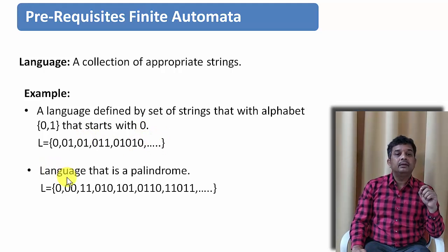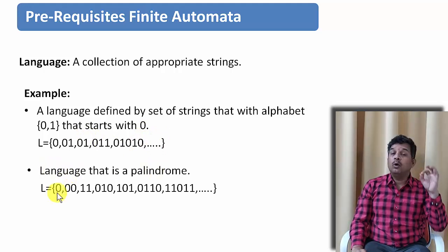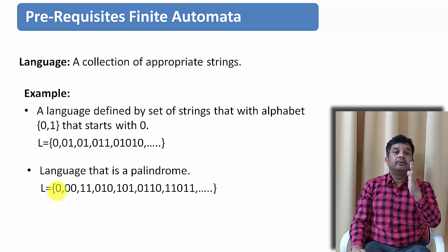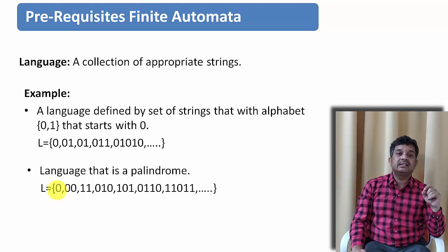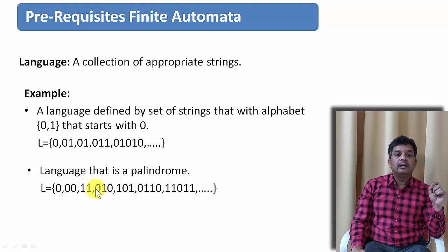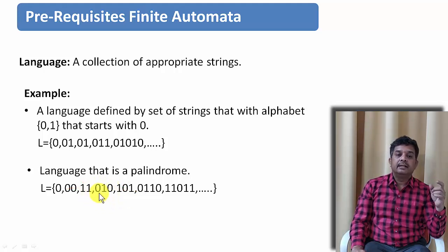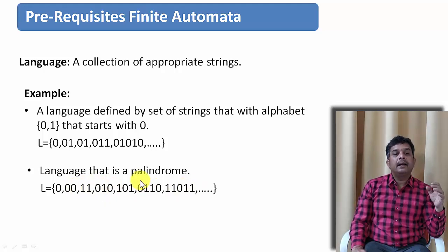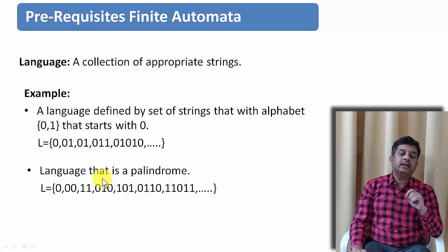Let us take one more example — the set of palindromes. If you start reading from the front or from the back, you get the same string. For example, a single 0 is a palindrome. Two 0's — reading from the front or rear gives the same result. Similarly 11 and 010: if you read it from the back or front, you get the same string 010. So all strings formed by 0 and 1 which are palindromes can be words in this particular language.